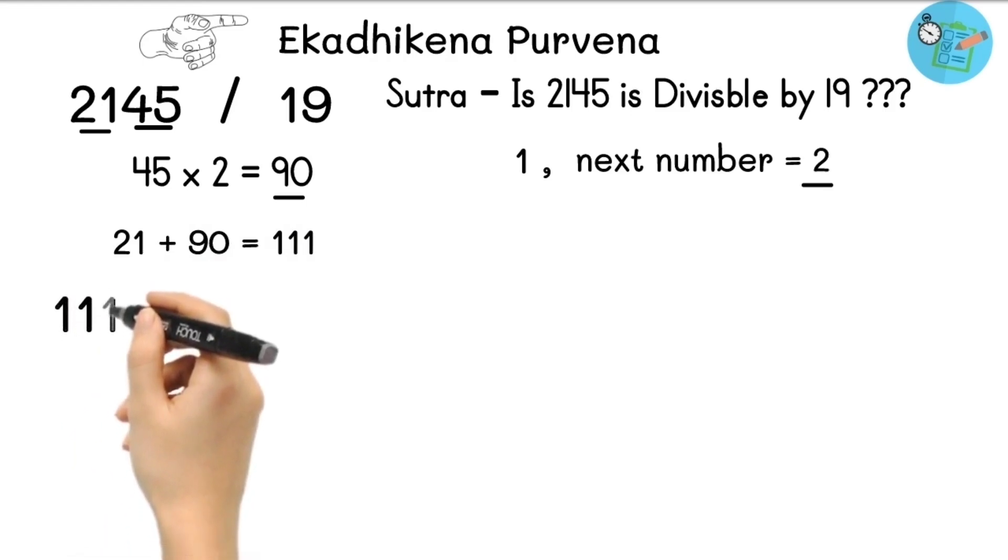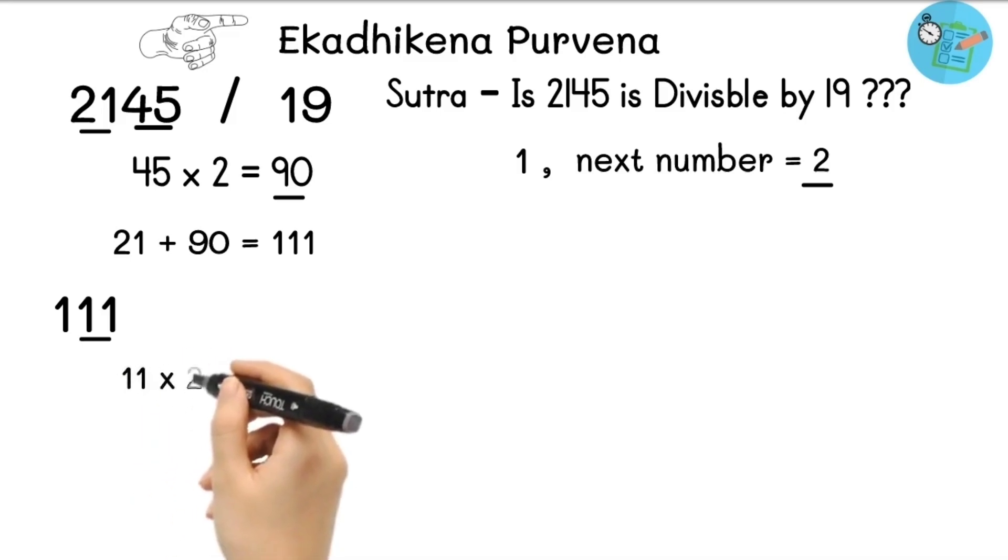Now 111 is 3 digit number, so again we will perform the same steps. So multiply last 2 digits of 111 with 2. So 11 multiplied by 2, we will get 22. Now add this 22 in the remaining digit of 111 which is 1. So 22 plus 1, we will get 23.